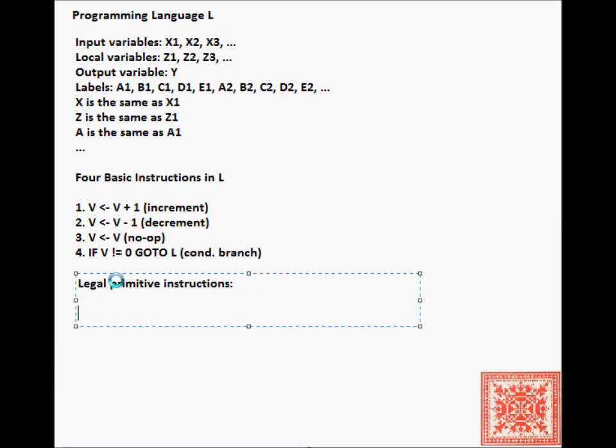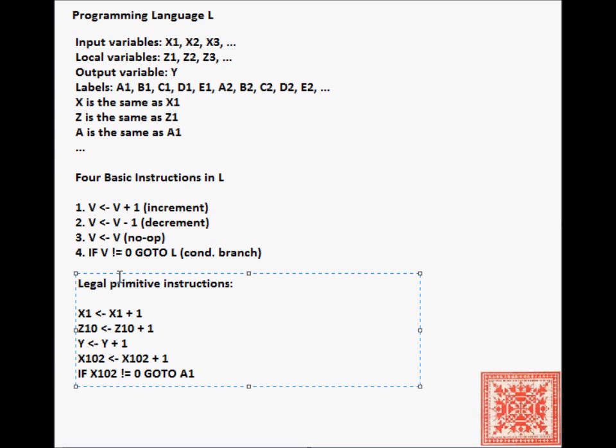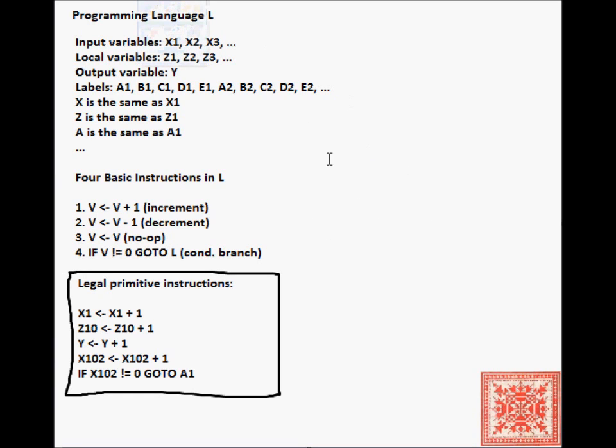Let's go through examples of legal primitive instructions. X1 arrow X1 plus 1, Z12 arrow Z12 plus 1, Y arrow Y plus 1, X102 arrow X102 plus 1. These are legal instructions because the variable on the left-hand side is the same as the variable on the right-hand side in each of those instructions. In the conditional statement, if X102 is not equal to 0 go to A1, A1 is a legal label.